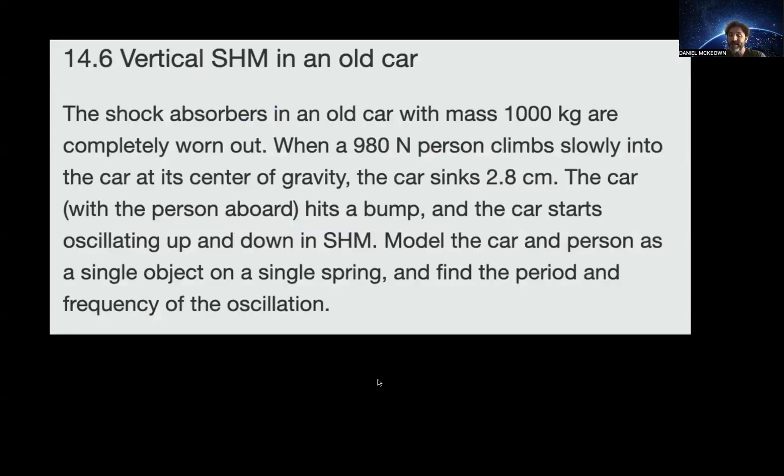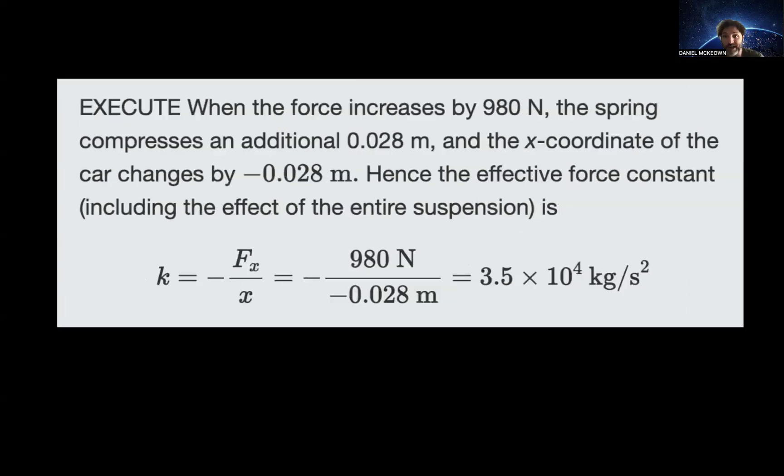So we have shock absorbers in an old car with a mass of 1,000 kilograms that are worn out. When a 980-Newton person climbs slowly into this car at its center of gravity, the car sinks 2.8 centimeters because it's like we're adding a weight to it so the springs settle at a new equilibrium point. The car with the person on board hits a bump, and the car starts oscillating up and down in simple harmonic motion because the shock absorbers aren't there to dampen that. So we can model the car and the person as a single object on a single spring. What's the period and frequency of the oscillation going to be?